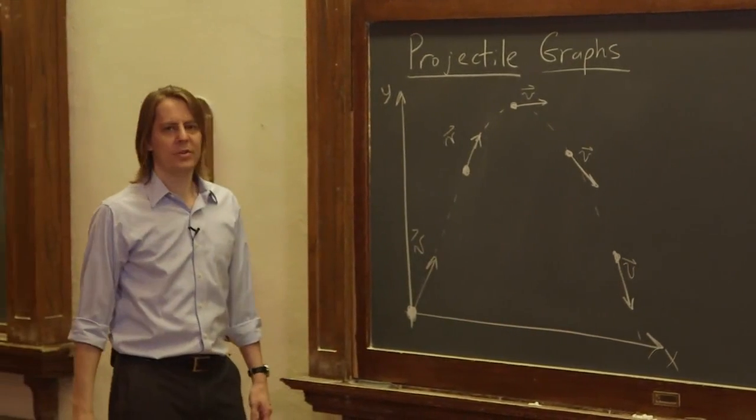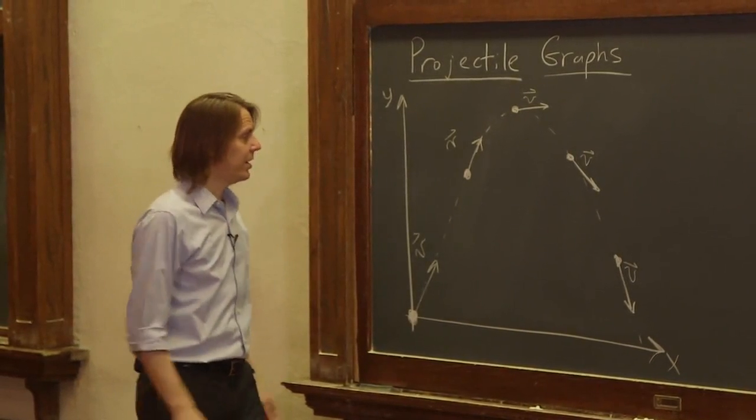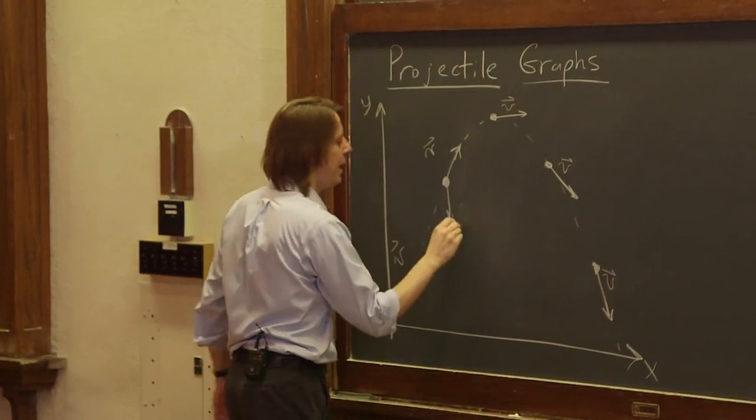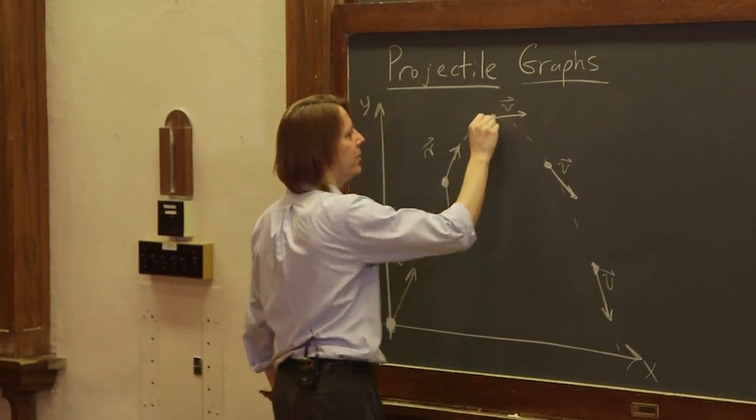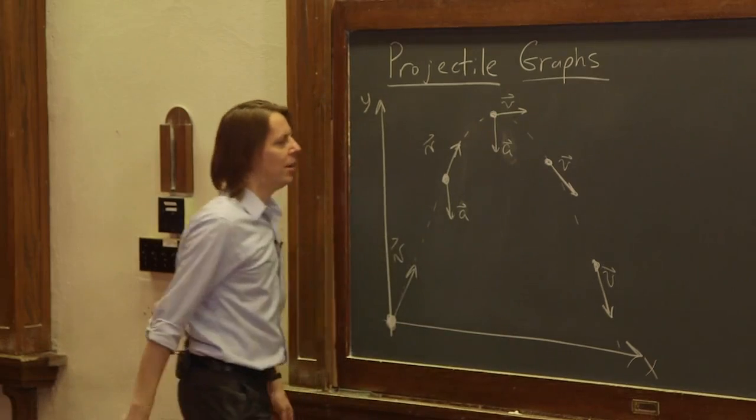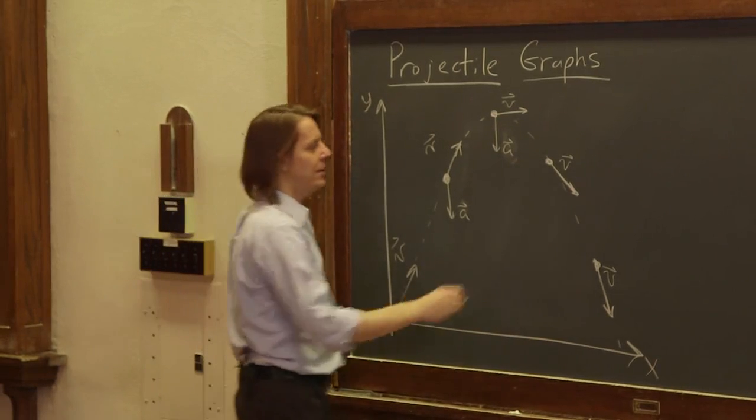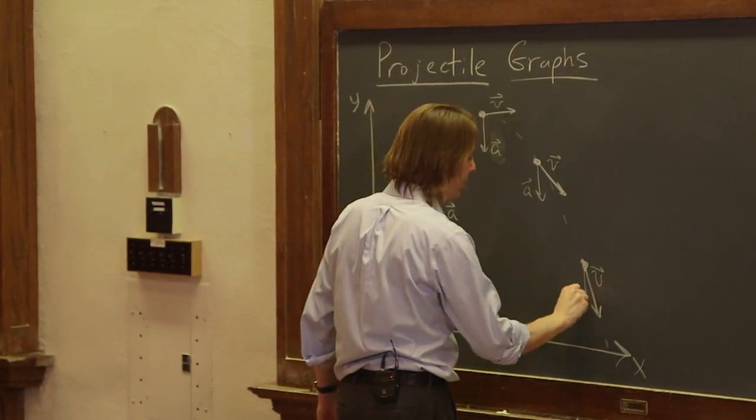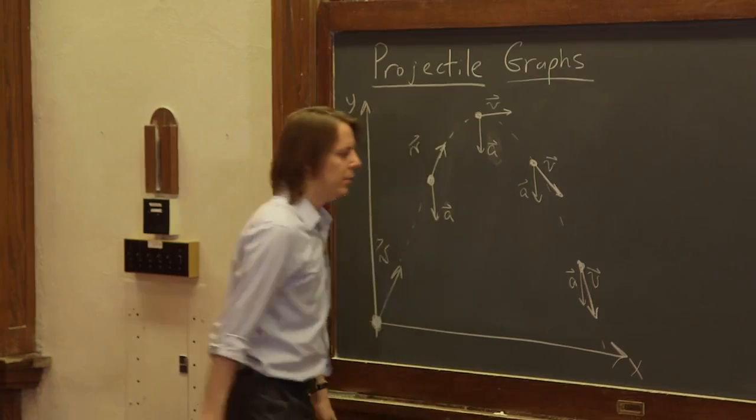We could think about what's the acceleration vector look like in every case. In every case the acceleration vector a points down. Because the only acceleration, the only force being applied to this object is gravity in this case because it's a projectile. So it's always accelerating down the whole time.